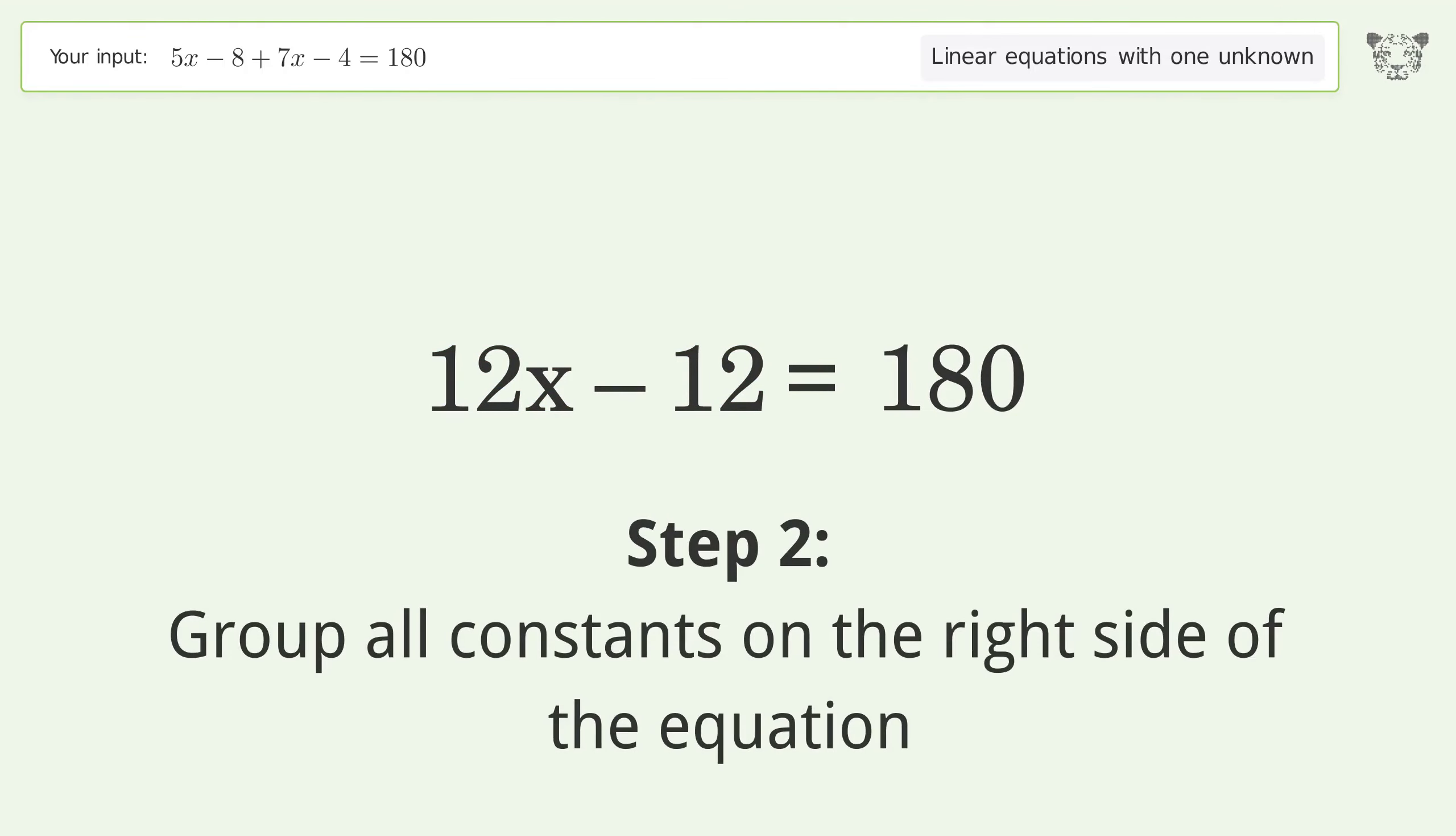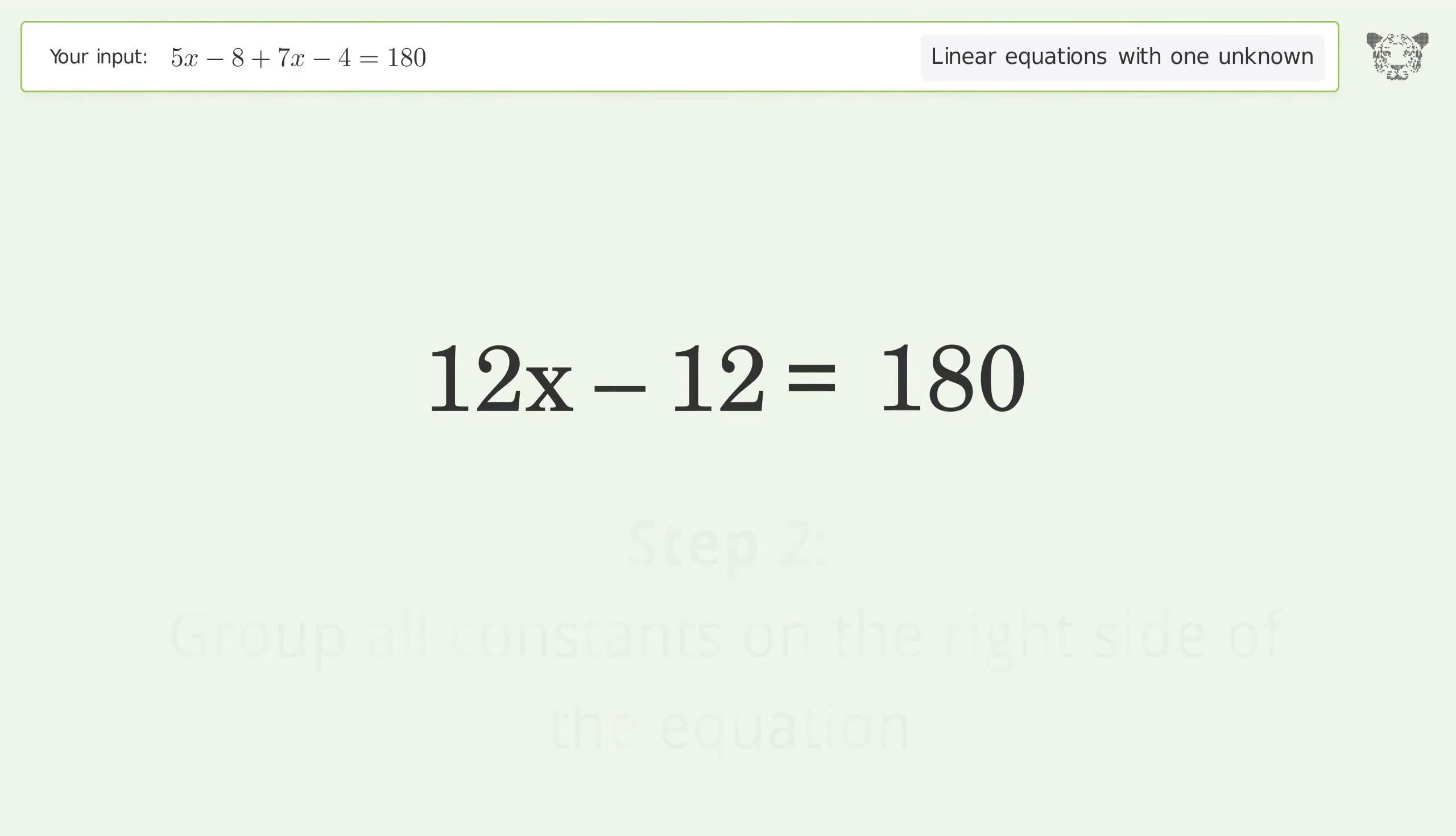Group all constants on the right side of the equation. Add 12 to both sides. Simplify the arithmetic.